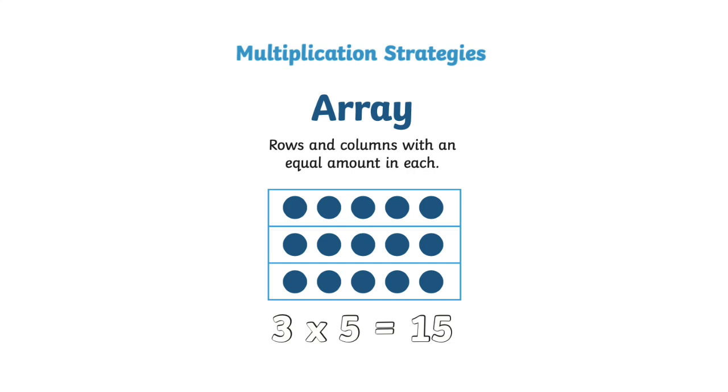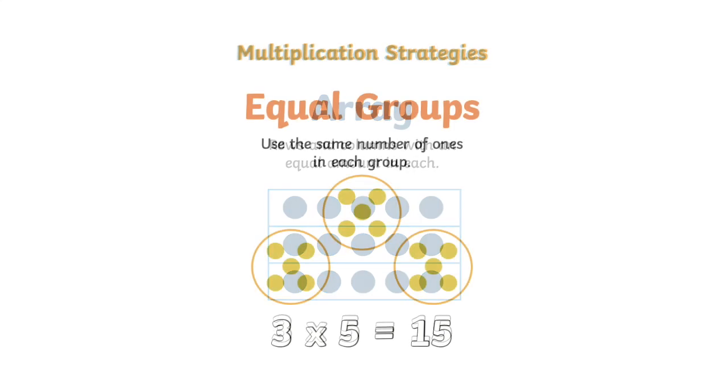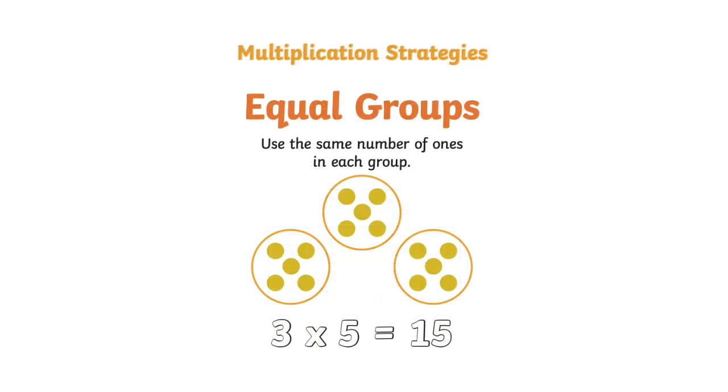An array: rows and columns with an equal amount in each. Equal groups: use the same number of ones in each group.